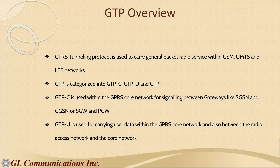GTP-U is used for carrying user data — mobile data — within the GPRS core network, and also between the radio access network and the core network. Basically, GTP carries mobile data throughout wireless networks, from radio access networks toward the core network. In the coming slides, I'll explain how we generate a huge number of user plane data flows and why it's required in terms of real-time equipment testing.